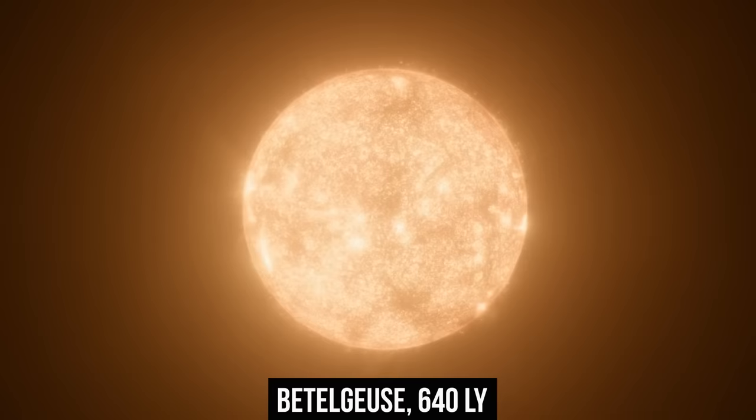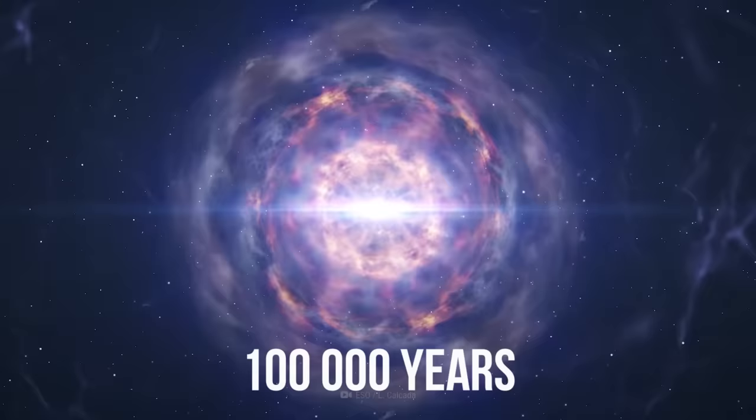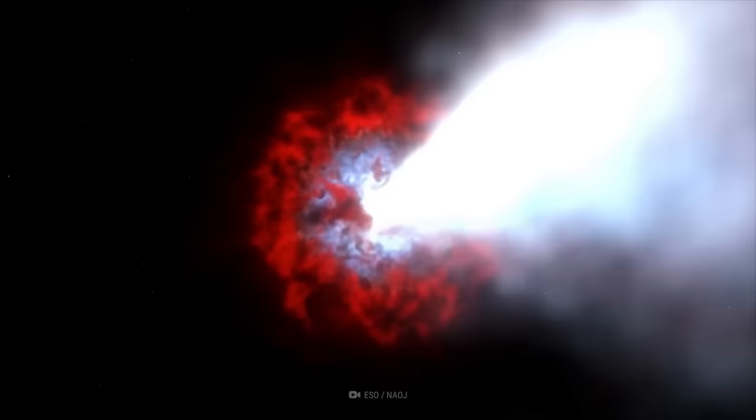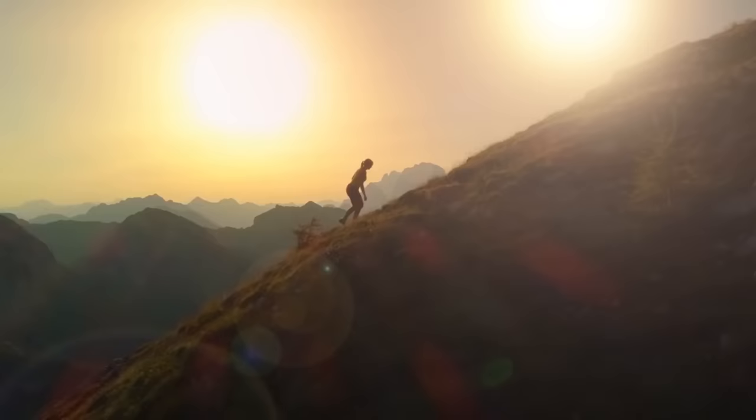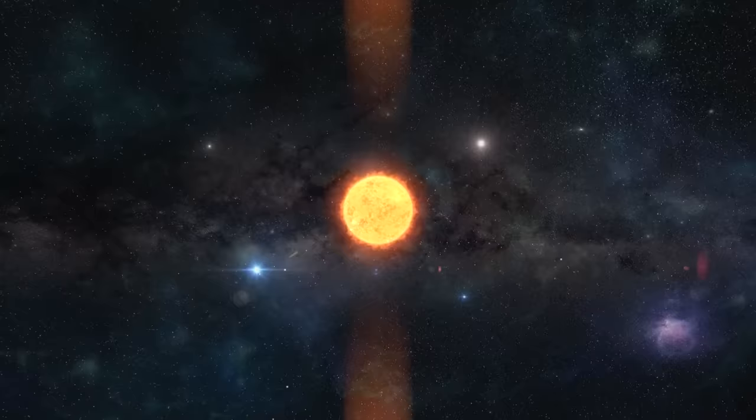Betelgeuse, a red supergiant, is about to turn into a supernova soon. By soon, I mean any moment in the next 100,000 years. A blink of an eye by the standards of astronomy. I'm not sure about you, but I would really want a picture of me standing against two suns shining in the background sky. That's exactly the effect Betelgeuse would bring once it becomes a supernova.